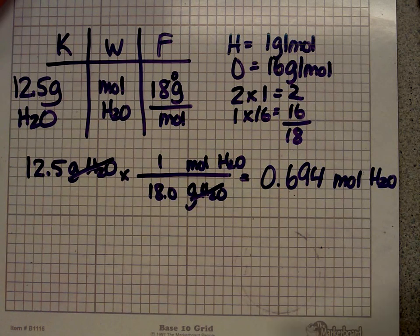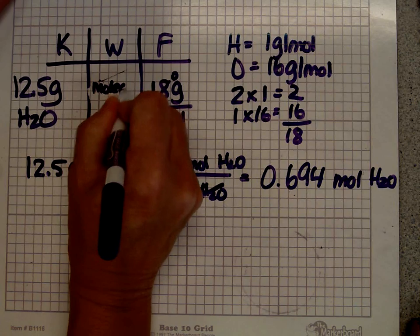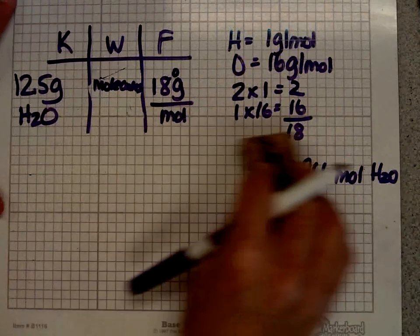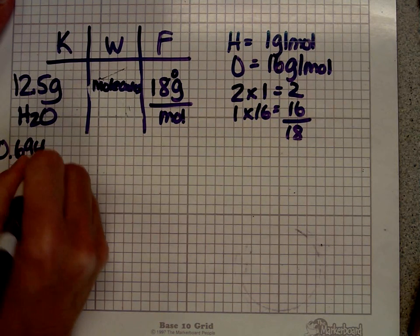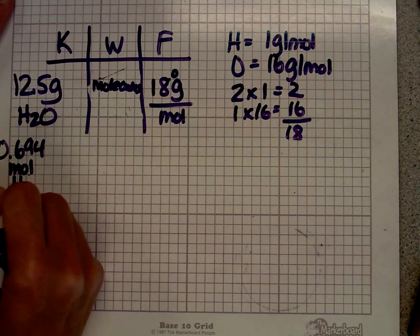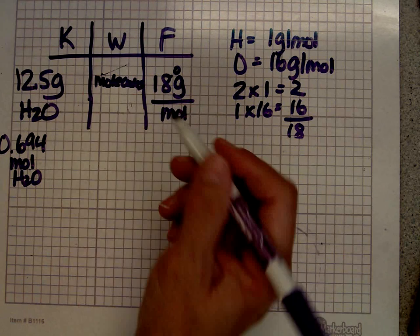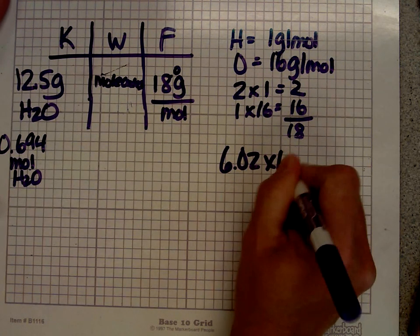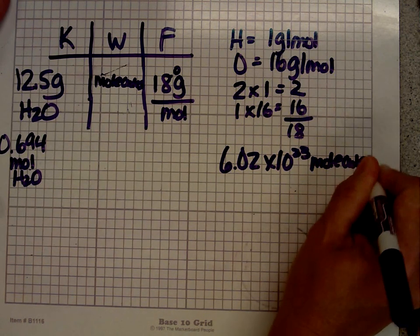But let's say instead of moles, I was asked to find the number of molecules of water in that same amount. Now I'm going to hang on to the 0.694. If I didn't know that already, I'd have to figure it out, but I do know it. I know that's the number of moles of water. What other number or formula do I have that relates molecules to moles? And it's Avogadro's number. 6.02 times 10 to the 23rd molecules in 1 mole.